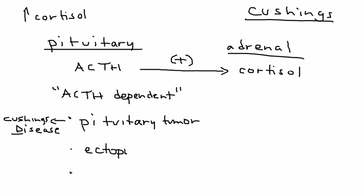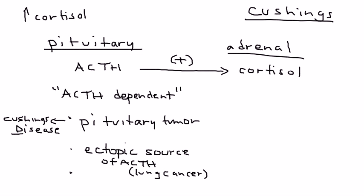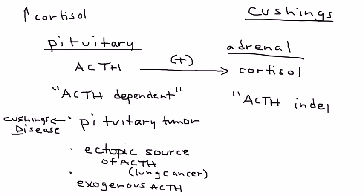The second ACTH-dependent subtype is when you have an ectopic source of ACTH — meaning a place other than normal. For example, certain lung cancers can produce ACTH. The third and final ACTH-dependent category is exogenous ACTH, where a patient is receiving ACTH from an outside source.